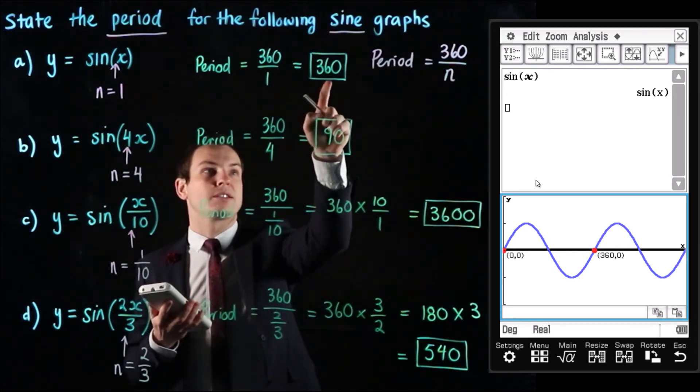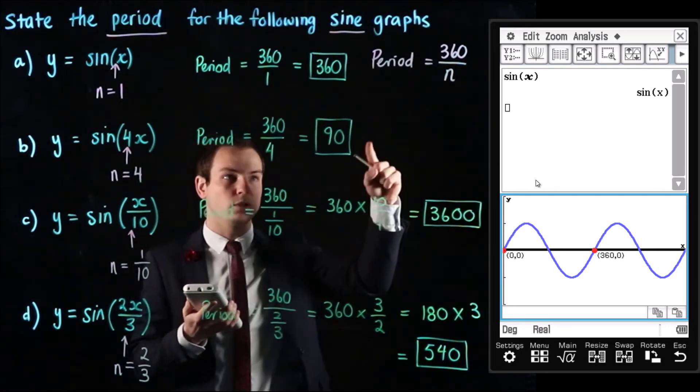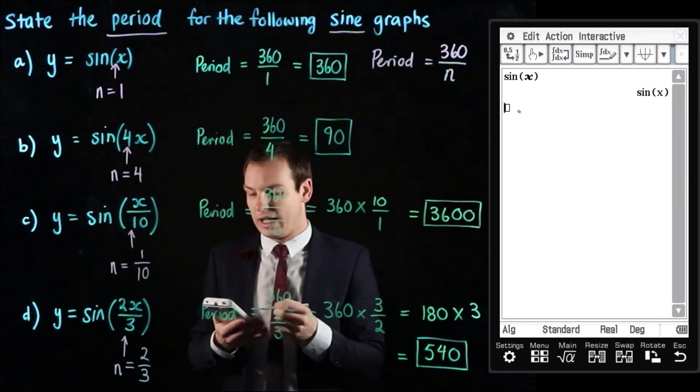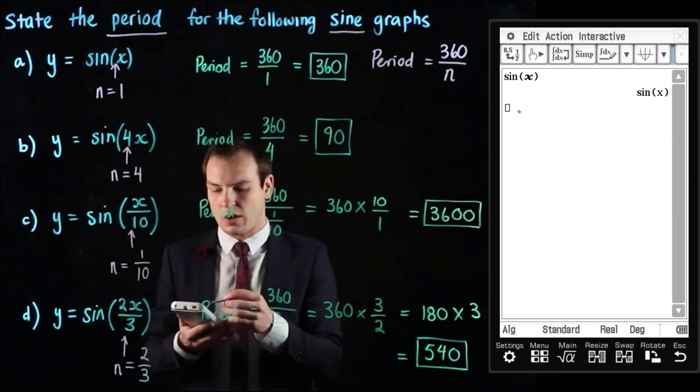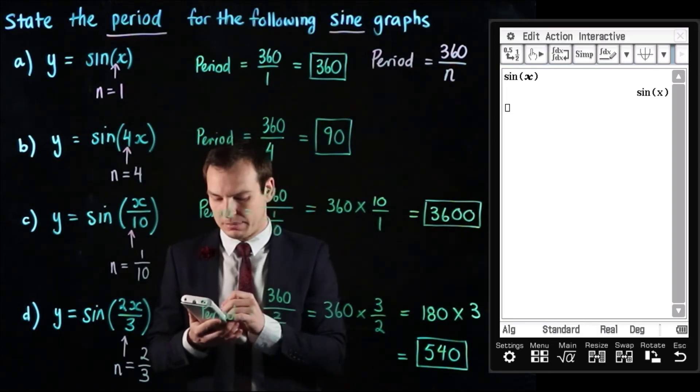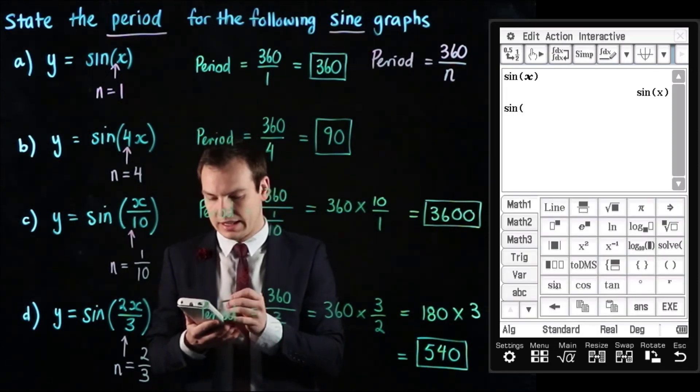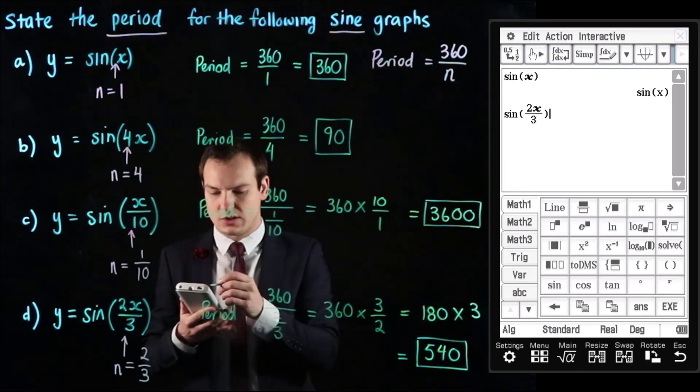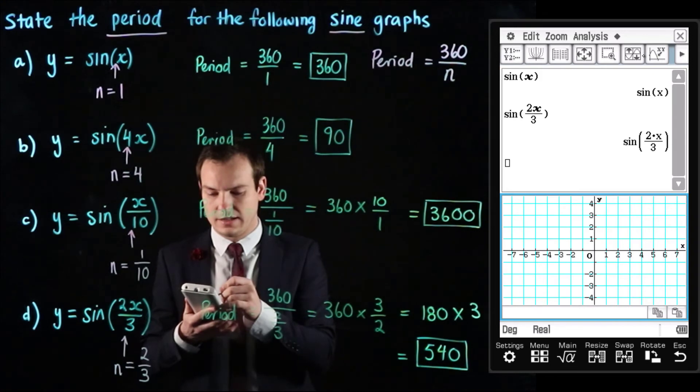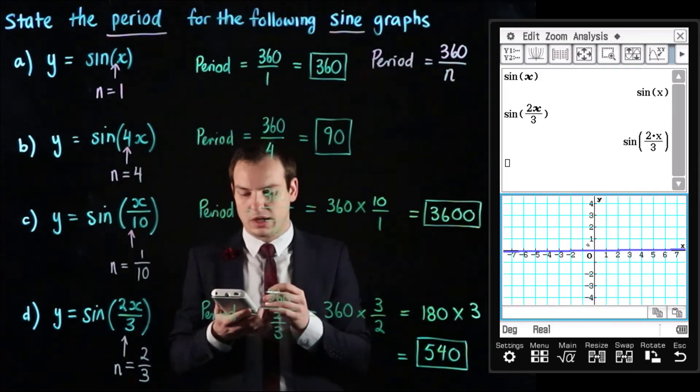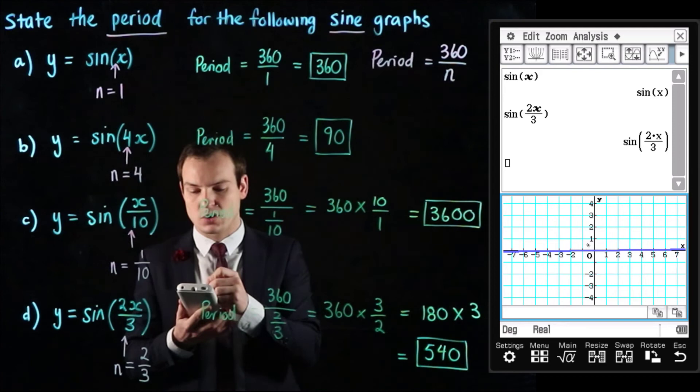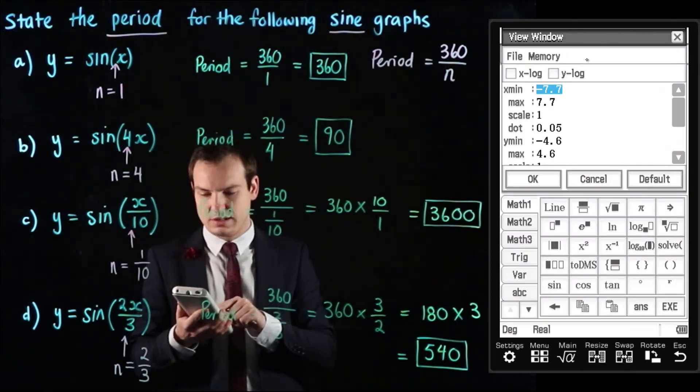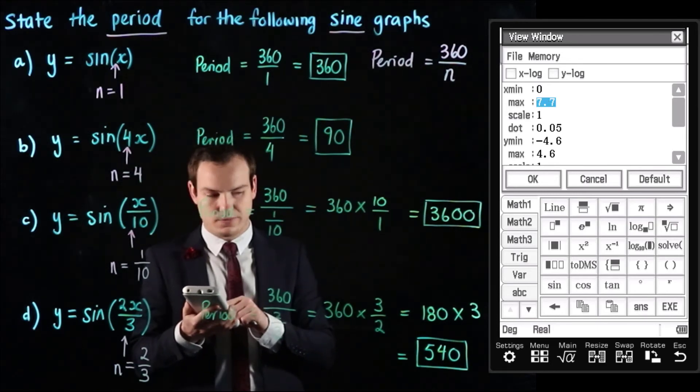So next we'll have a look at part d so going back to the main menu and bring out the keyboard we can type in sine and then a fraction 2x divided by 3 and hitting execute we're now going to open up the graph screen and drag that in and once again we're going to need to change our view screen so we're going to click on the four arrows at the top and we're going to go this time from x is 0 to x is 540 because that's the period which is how long it will take for one cycle to happen.